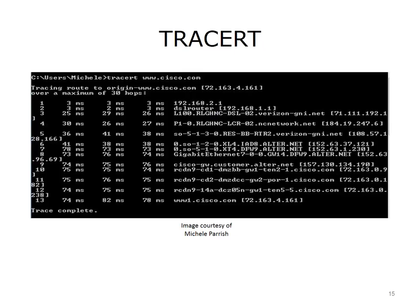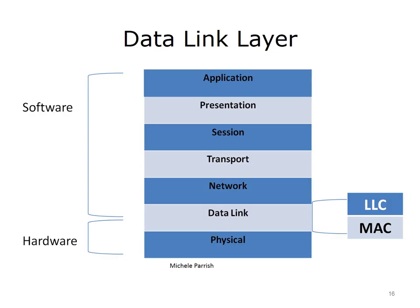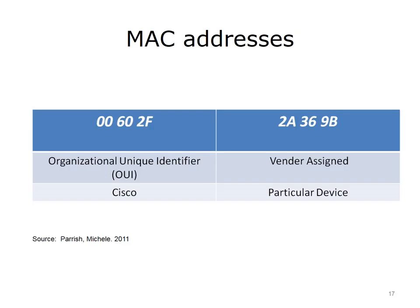Ping is used to test if a particular host is reachable on a network and to measure the round-trip time for packets sent from the local host to a destination computer. Ping uses ICMP echo request and echo reply packets. You can ping a device's IP address or its host name. Trace Route is a utility used to trace the route a packet takes from source to destination. The output shows the IP address and sometimes the host name of the routers traversed as the packet travels from one device to the other.